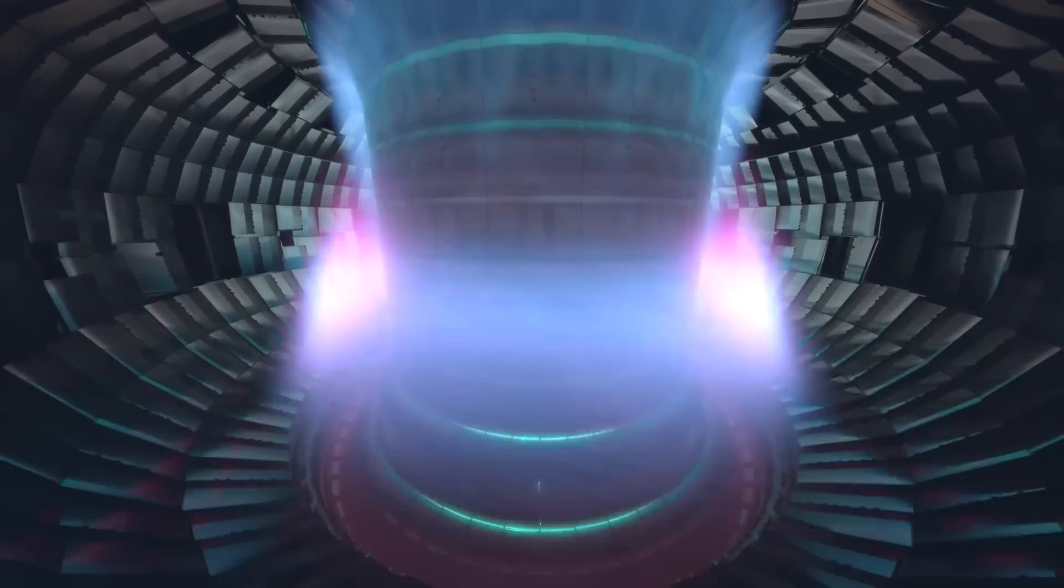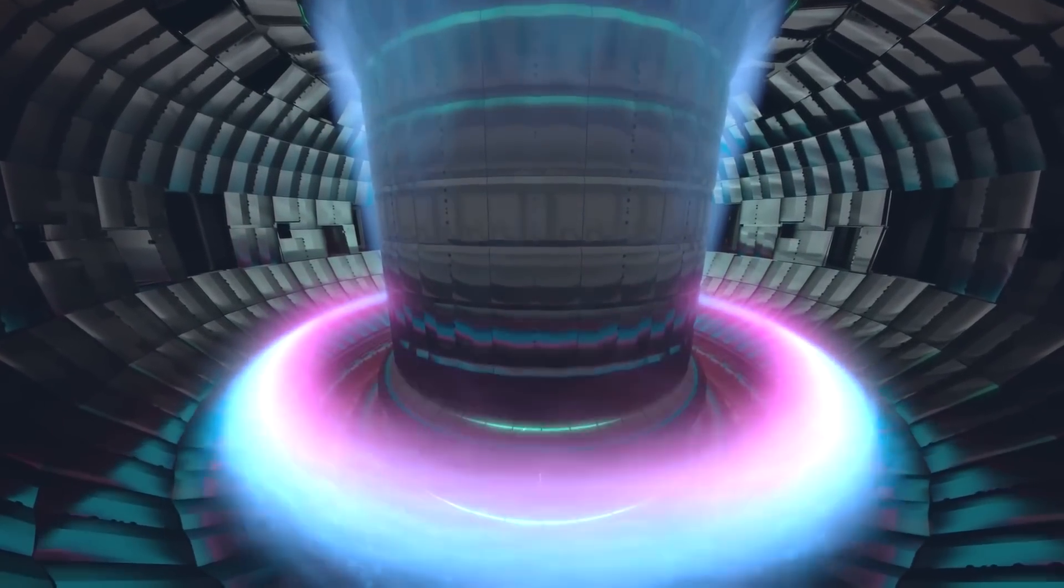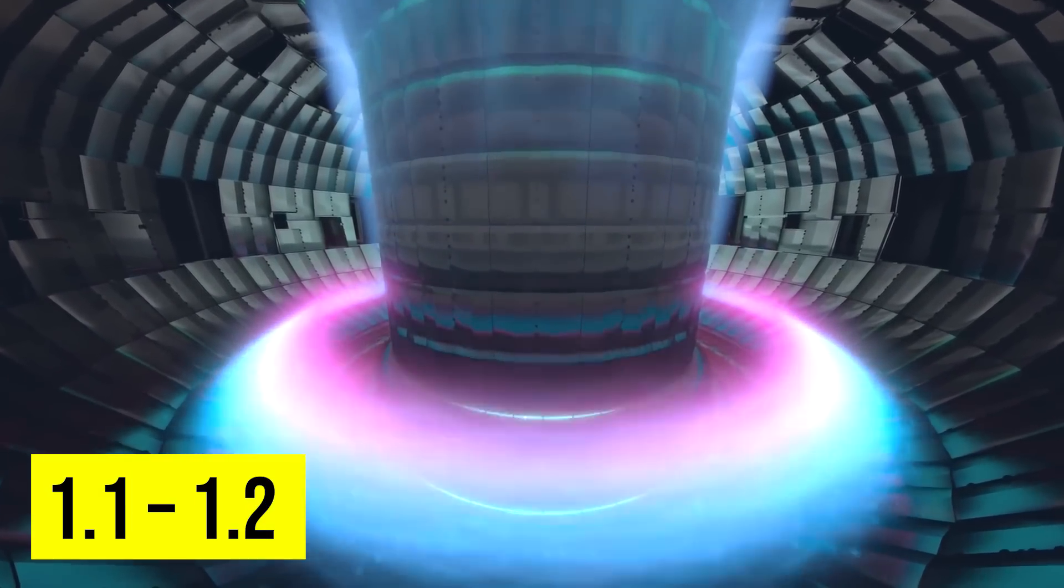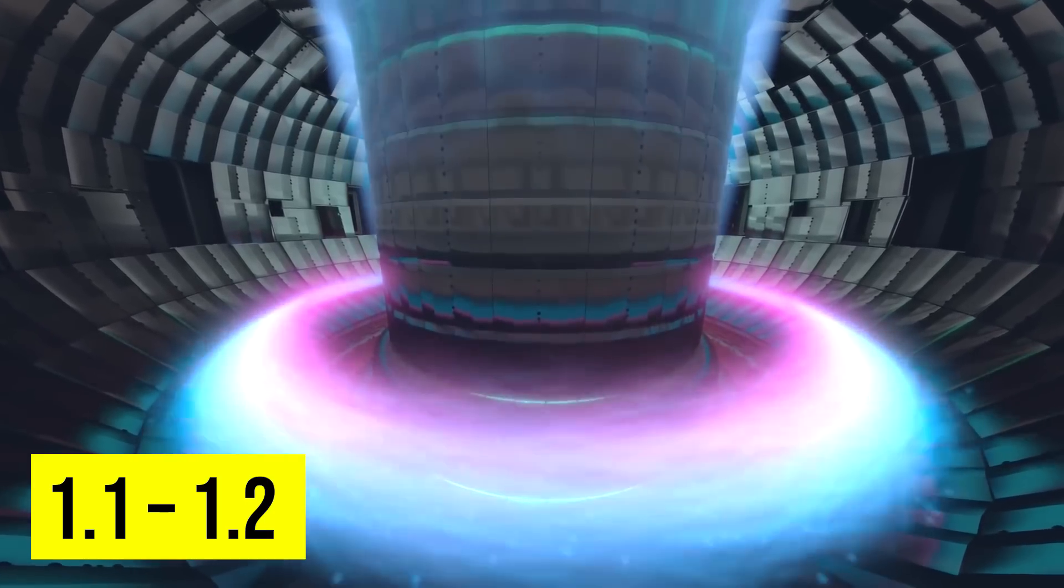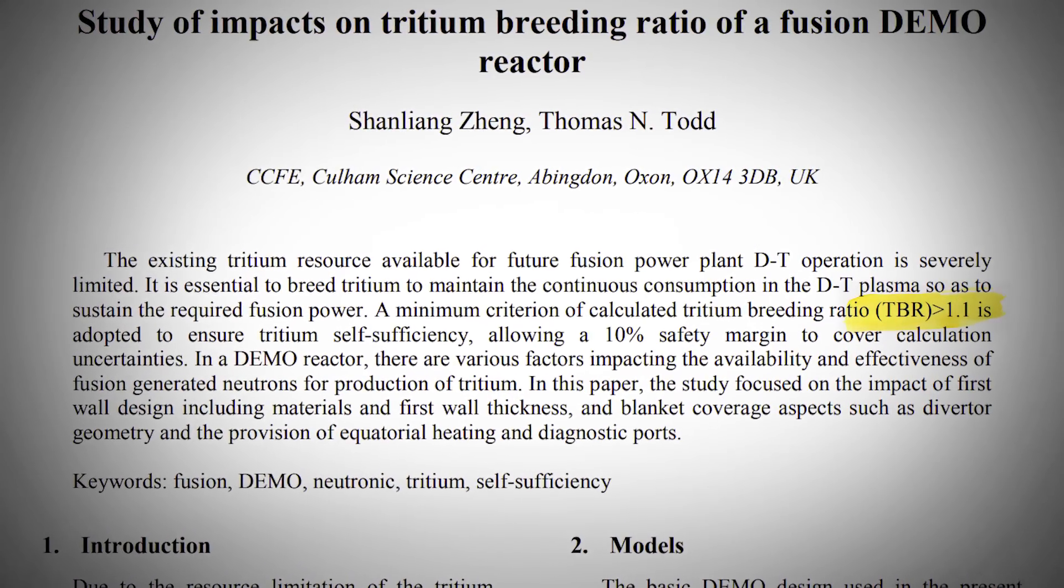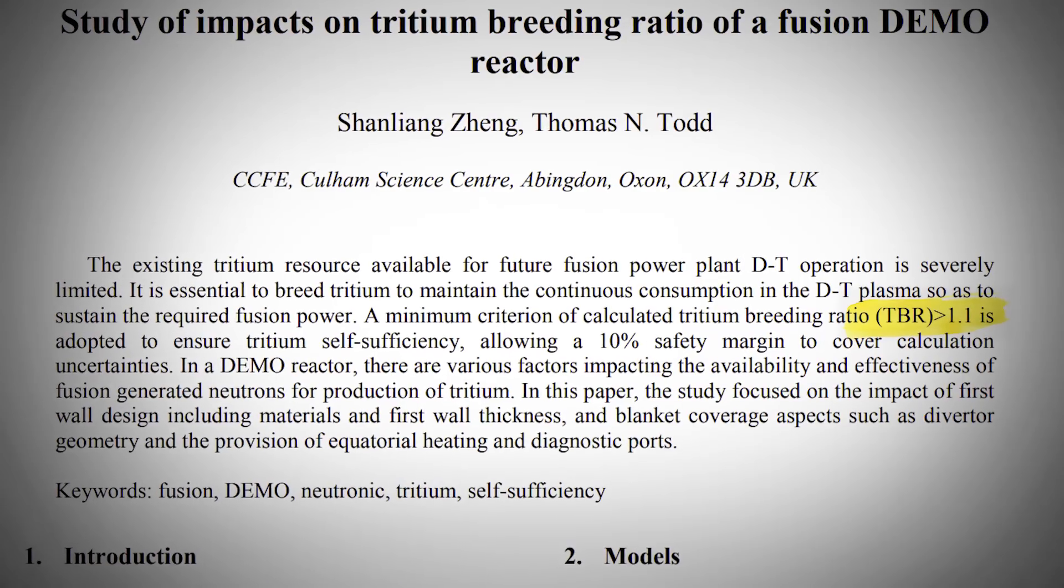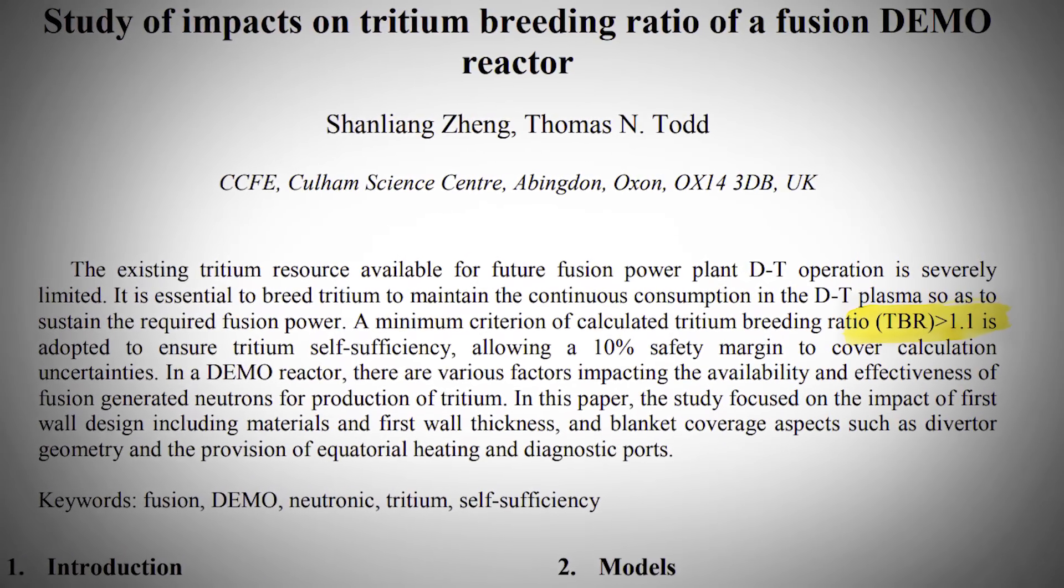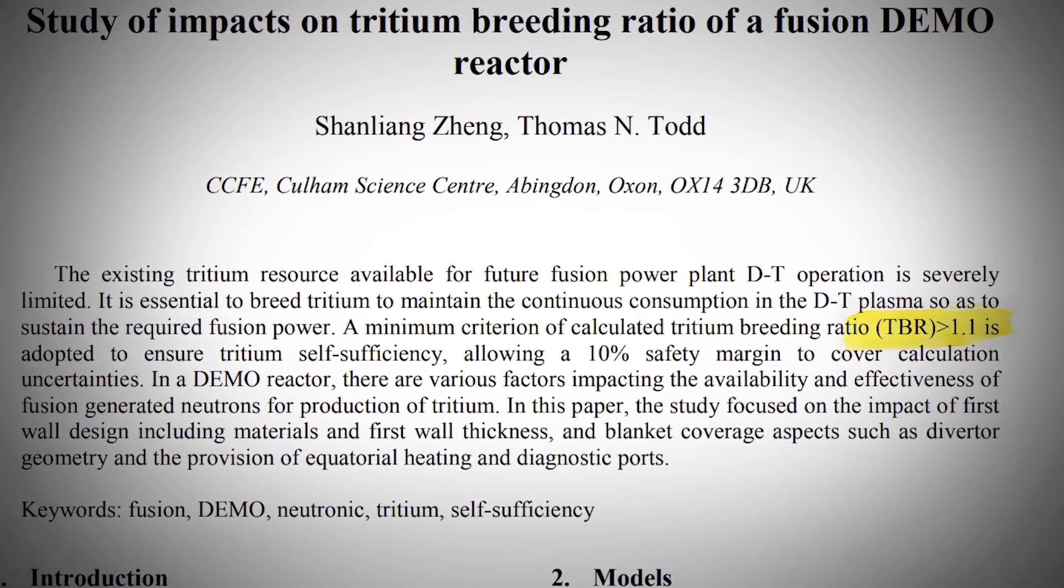Therefore, in reality, it is estimated that we'll be able to get around 1.1 to 1.2 times as much tritium out compared to what we put in, which is apparently just about enough to sustain the tritium supply for a fusion reactor when we account for other inefficiencies within the system.